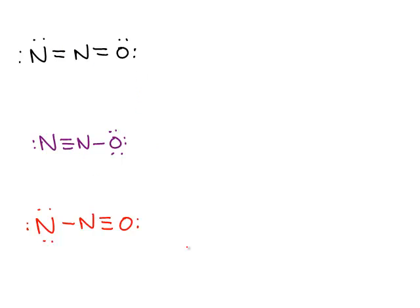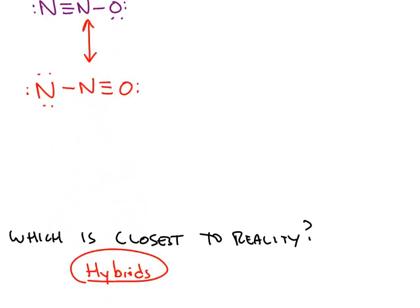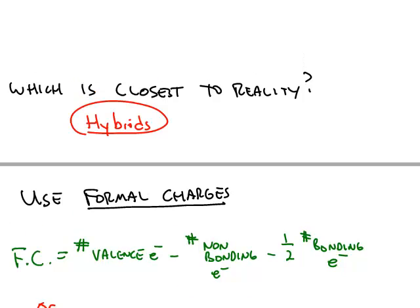All of these have the correct number of electrons. All of them have the atoms in the same position, so these are all resonance forms. You show that they're resonance forms by connecting them with arrows that look like this.